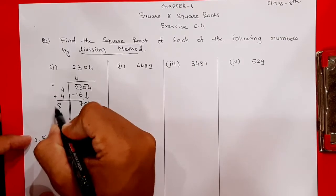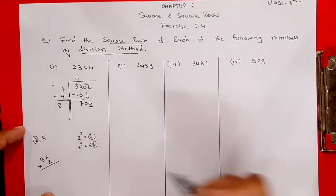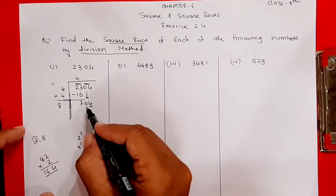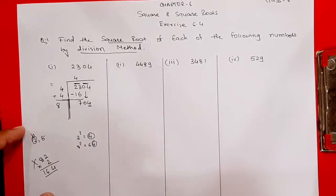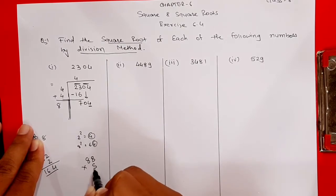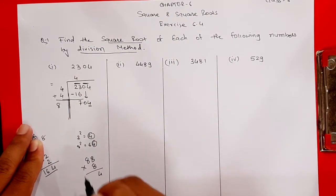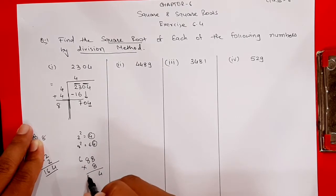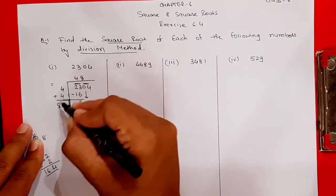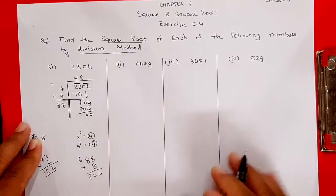We have 8 here. First try placing 2: 82 × 2 = 164, but we need 704 so 2 won't work. Now try 8: placing 8 gives 88, so multiply 88 × 8. Eight eights are 64, carry 6; eight eights are 64 plus 6 = 70. So 88 × 8 = 704. The remainder is zero.